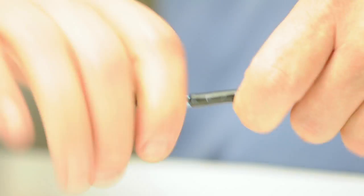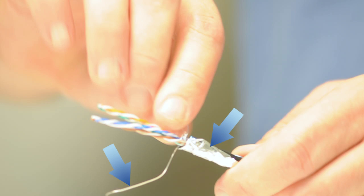Inside of the shielded cable you'll notice a foil shield and a drain wire. This is what shields the cable from EMI.